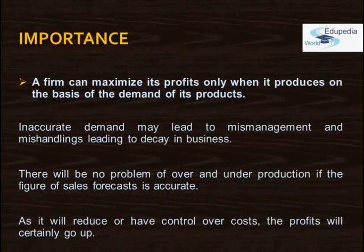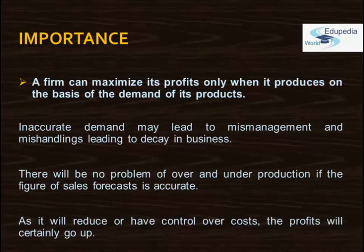A firm can maximize its profits only when it produces on the basis of demand for its products. The next important point is about the maximization of profits. Inaccurate demand forecasting may lead to shortages in production, excessive inventory, understaffing, delays in deliveries, and various other mismanagements leading to decay in business. There will be no problem of over- or under-production if the sales forecast figure is accurate, as it will reduce or control costs and profits will certainly go up.